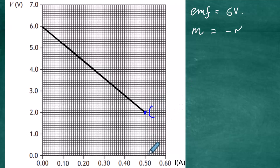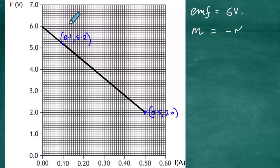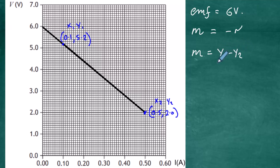I pick a first point at a current of 0.5 amps and 2.0 volts, and a second point further along the line at 0.1 amps and 5.2 volts — one square represents 0.1, so it's two squares above 5.0. I label these as (x1, y1) and (x2, y2). The gradient formula from maths is: gradient = (y1 − y2) / (x1 − x2).